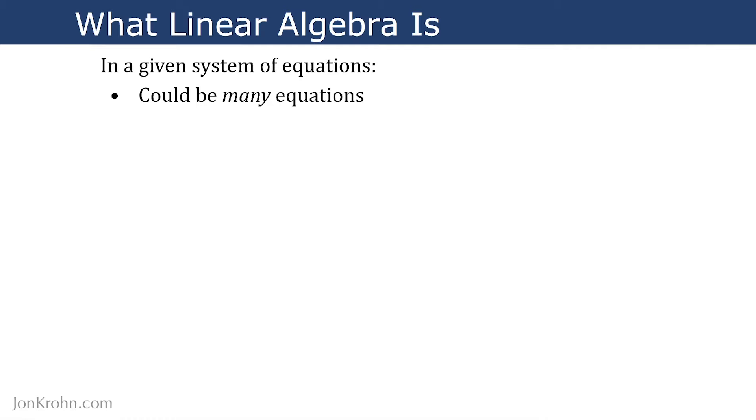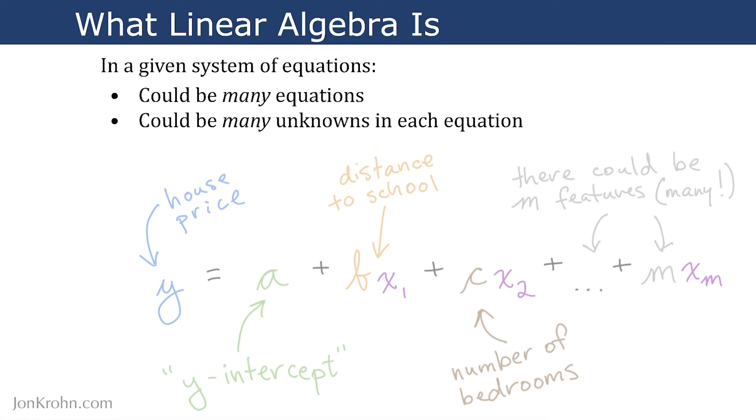In a given system of equations, there could be many equations. There could be many unknowns in each equation. In the example that I just showed you, there were two equations and there were two unknowns. However, let's consider another example here where we are building a model, specifically, this is something called a regression model, which I'll get into a little bit of the detail here in case you're not already aware of it. So, in this model here, we are trying to predict house price. So, we have for a given house, we have its price that we're predicting, Y. And then we also have a number of features or variables that we are collecting to try to predict that house price. And in a lot of cases, the more features that you have, the more accurately you're going to be able to predict what you're trying to predict, the more relevant features.